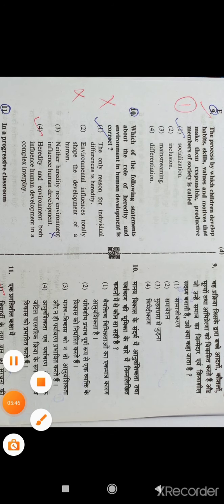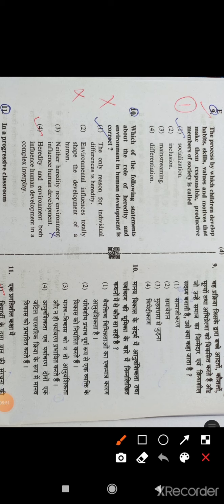Question 9: The processes by which children develop habits, skills, values and motives that makes them responsible, productive members of the society is called socialization. So option number 8 is the right answer.